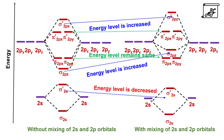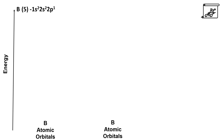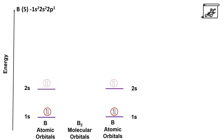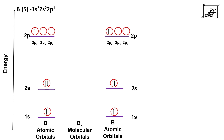Now let's study the application of molecular orbital theory to the boron molecule. Boron has atomic number 5 and its electronic configuration is 1s2, 2s2, 2p1. On the left-hand side we have energy; on the two sides we have boron atomic orbitals and at the center we have boron molecular orbitals. First there are 1s orbitals with a pair of electrons, above this there are 2s orbitals with a pair of electrons, and above 2s there are 2p orbitals with one unpaired electron in one of them, namely 2px, 2py, and 2pz. The 1s orbital is an inner orbital and therefore does not participate in bonding, so it remains non-bonding.